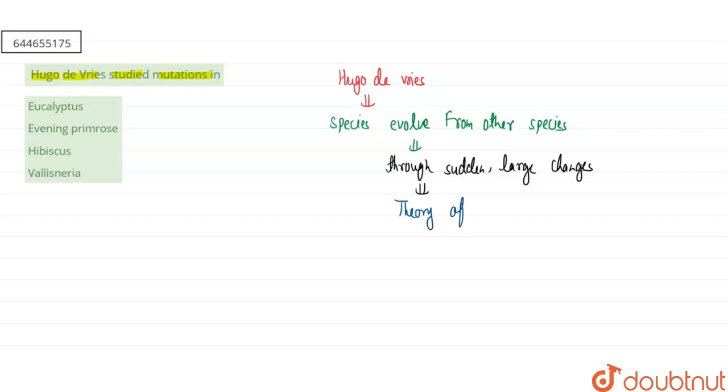And for this theory, he worked upon the plant that is Oenothera. Here, the name of the plant is Oenothera lamarckiana.